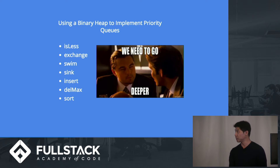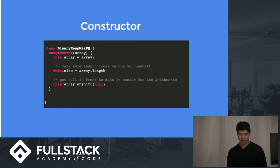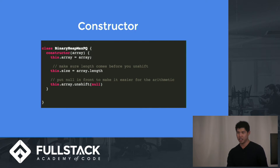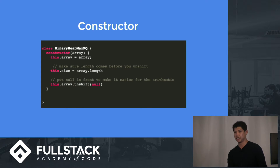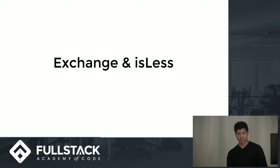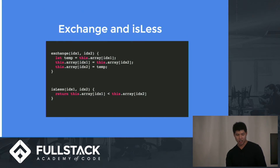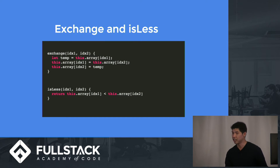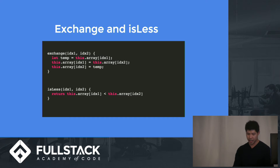These are a couple of functions we need to implement to get things going. First, the constructor, which has a couple of properties: the array, a size property, and an unshift at the end to place an empty component at index 0. The first two helper functions, for modularity's sake, are exchange and isLess. Exchange does what you'd expect — it swaps two elements in the array using a temporary variable. And isLess just checks whether one element is less than another.